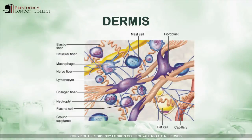We will now look at some important structures in the dermis. Firstly, fibroblasts. These cells are responsible for producing collagen fibers. Collagen fibers are produced as straight, smooth bundles during youth.